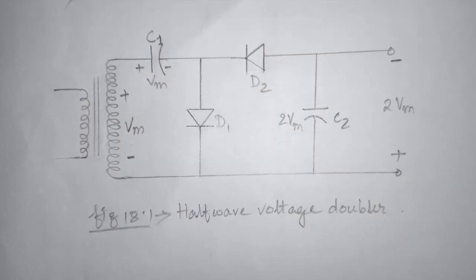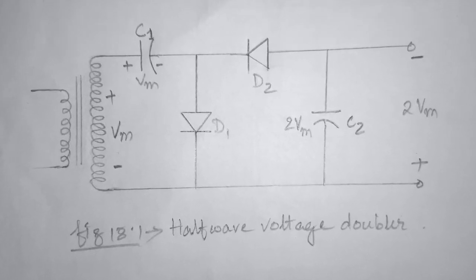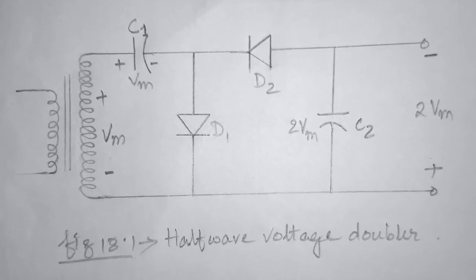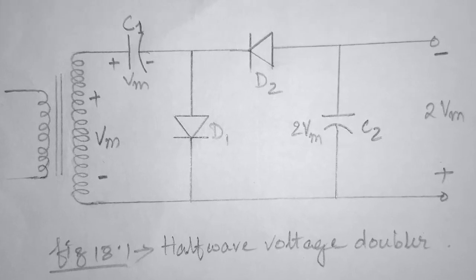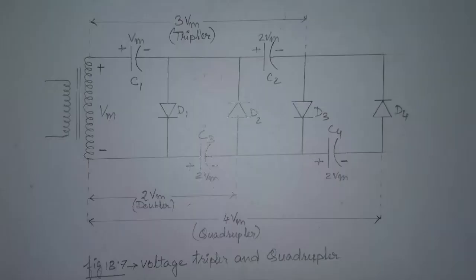A voltage multiplier is an electronic circuit that is used to maintain a relatively low transformer peak voltage, while stepping up the output voltage to 2, 3, 4, or more times the peak rectified voltage. It converts an AC electrical power from a lower voltage to a higher DC voltage. The voltage multipliers can be used for purposes such as high energy physics experiments, lightning safety testing, etc.